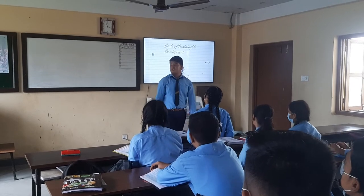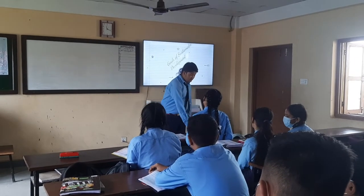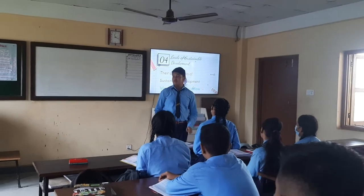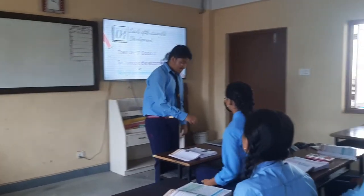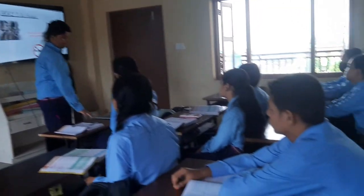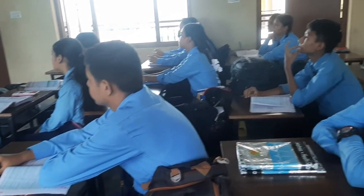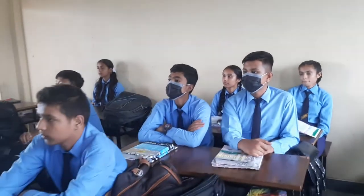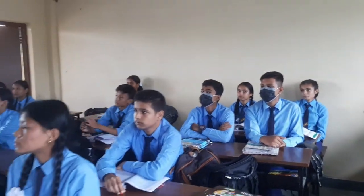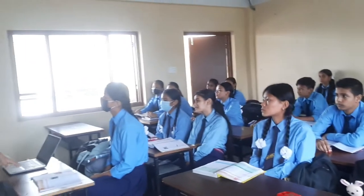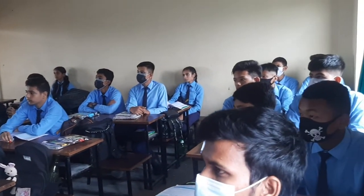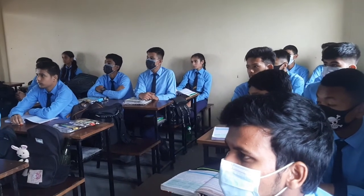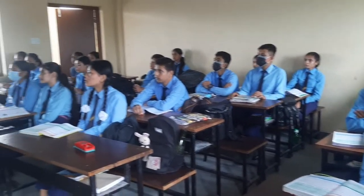Goals of sustainable development. There are almost 17 goals of sustainable development. Number one: no poverty. It is the biggest problem of our society and of whole nations. It can easily hinder our future and separate us from development, preventing us from becoming a developed world. Poverty is found everywhere.